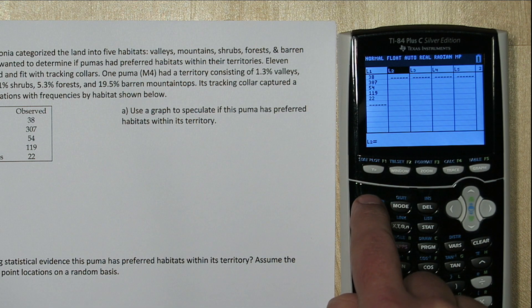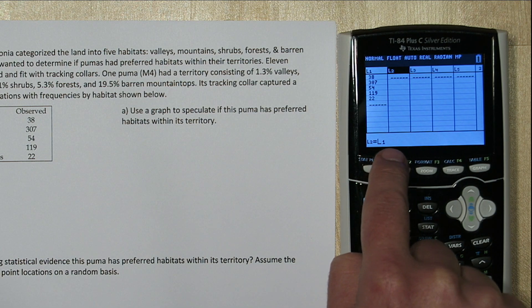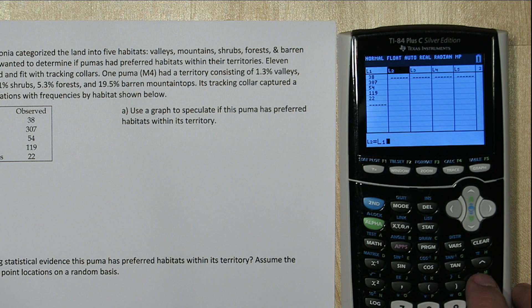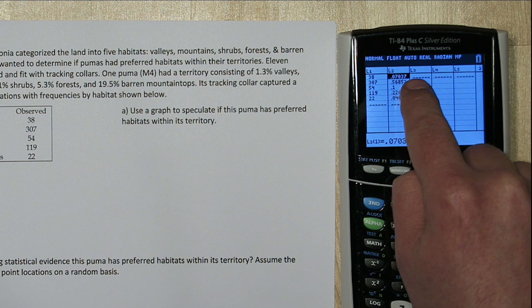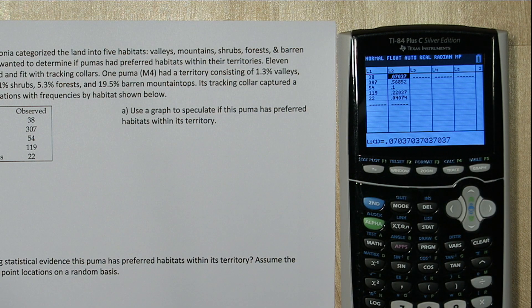So for function, we're going to put second and one, which types list one, and we're going to divide everything in list one by 540. So now when I press enter, this is the observed proportion of time in each of the habitats for this puma.